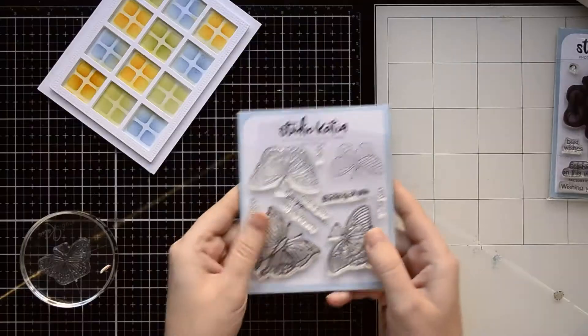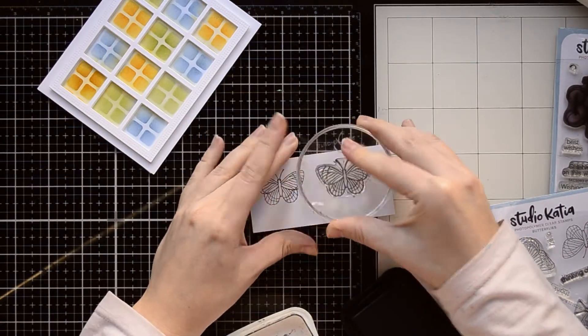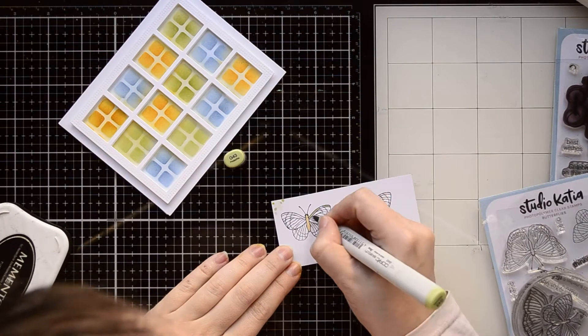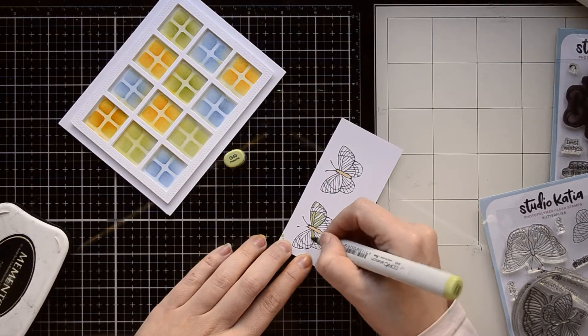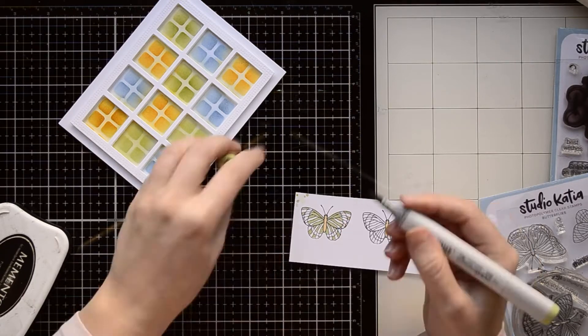And I want to add two little butterflies on my second card. I stamp the butterfly twice on white cardstock using Copic friendly Memento black ink. And I'm going to color them with the same colors I use on the card background.